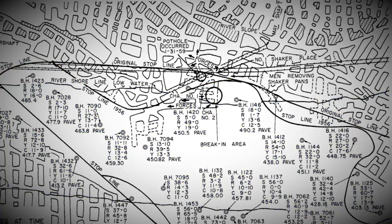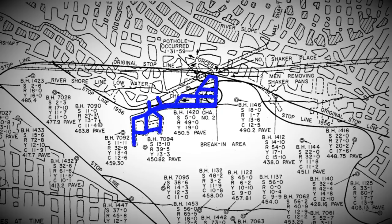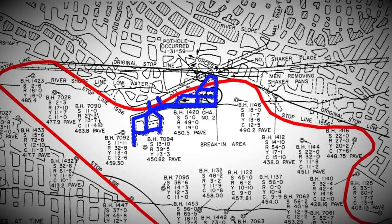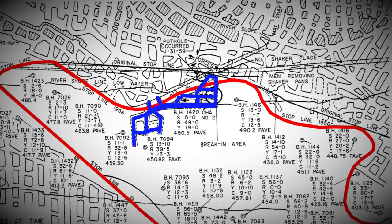Two illegally dug gangways were extended under the river 125 feet past the officially and clearly designated stop lines. The workings then sharply turned up to follow the Pittston vein.